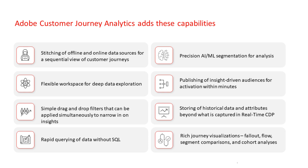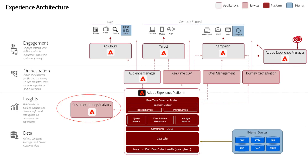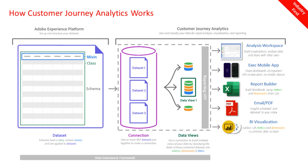Additionally, CJA enables true customer segmentation by considering all data attributes and activities. CJA is built on AEP's core foundational architecture. It is one of the add-on applications and requires a separate license. Let me start with how it all works together, starting from data sets.